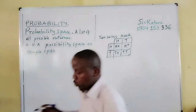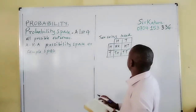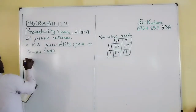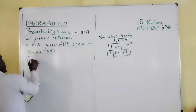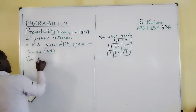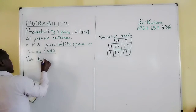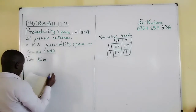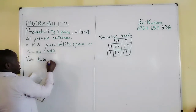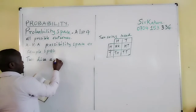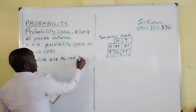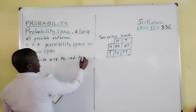The question says that two dice — dice is the plural of a die — are tossed together.